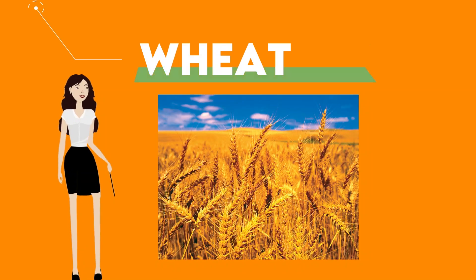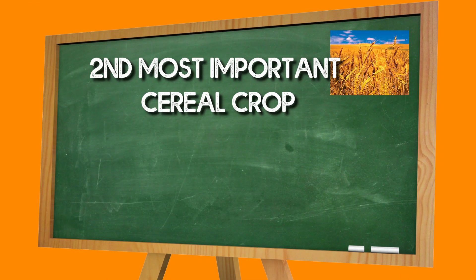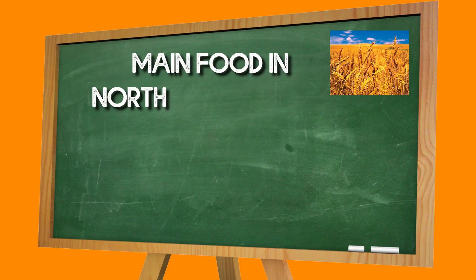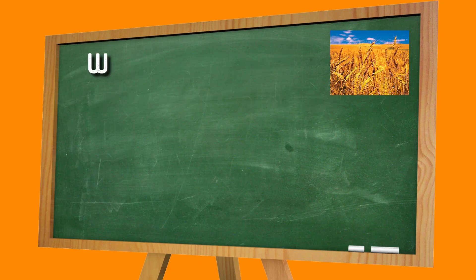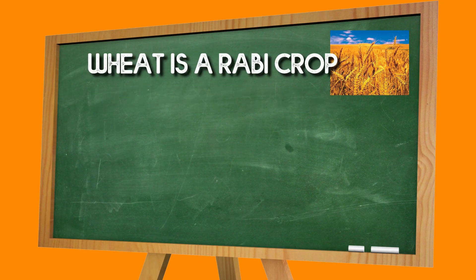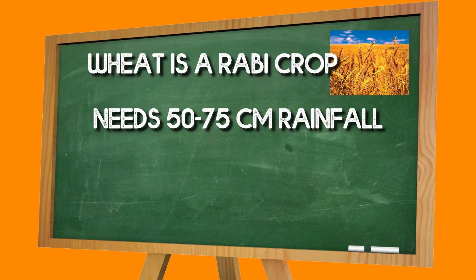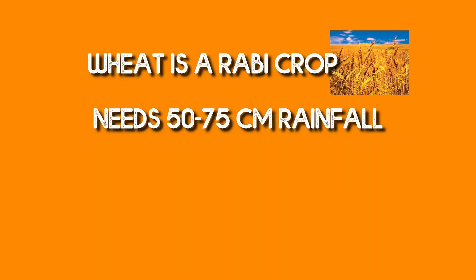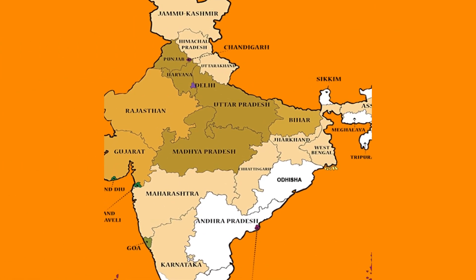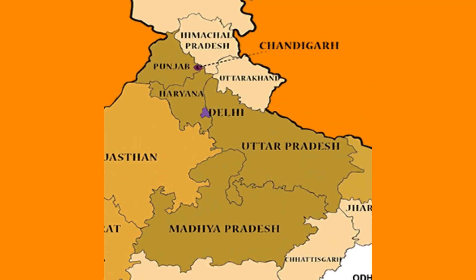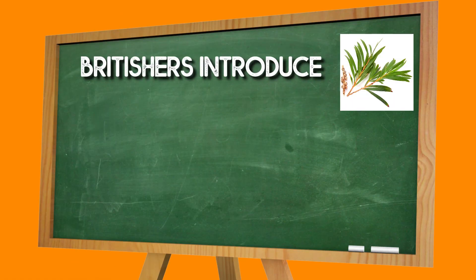Number 2 is Wheat. Wheat is our second most important cereal crop and the main food crop in North Western India. Wheat grows in the Rabi season and requires 50 to 75 cm of rainfall. The major wheat producing states are Punjab, Haryana, and Western Uttar Pradesh.